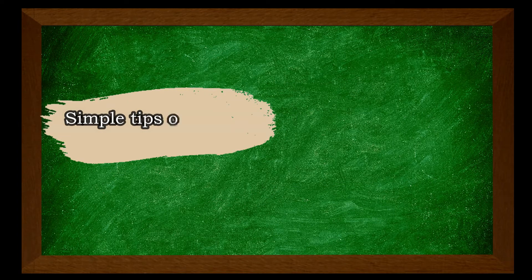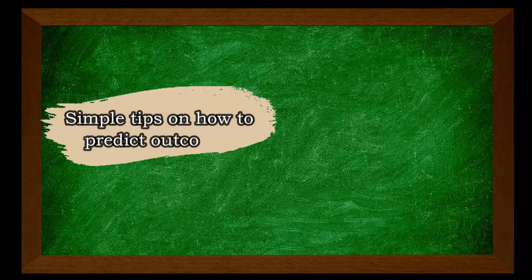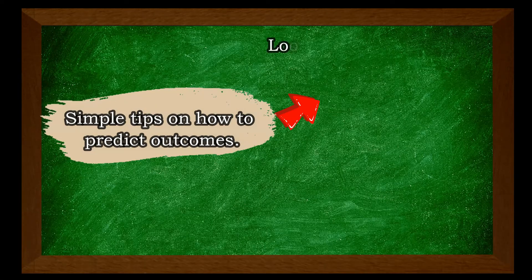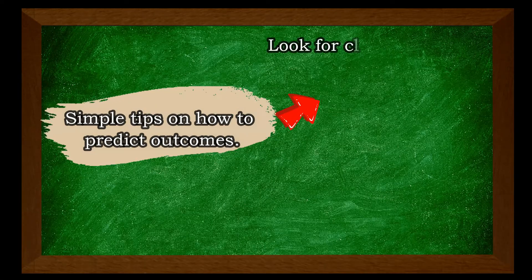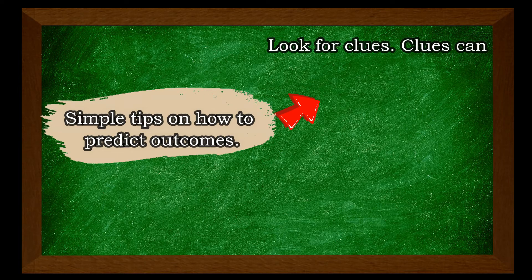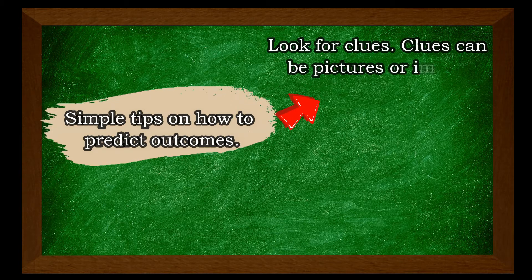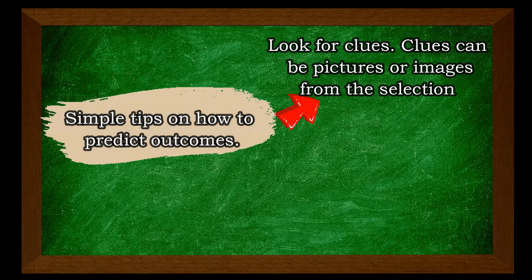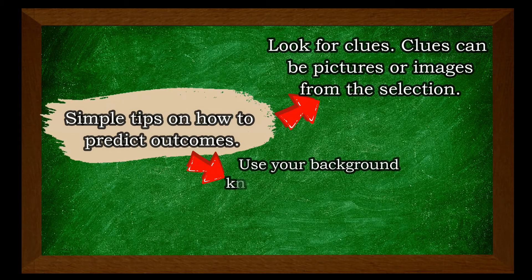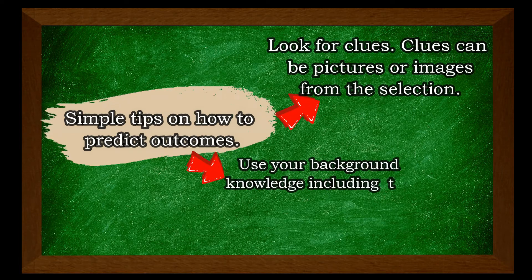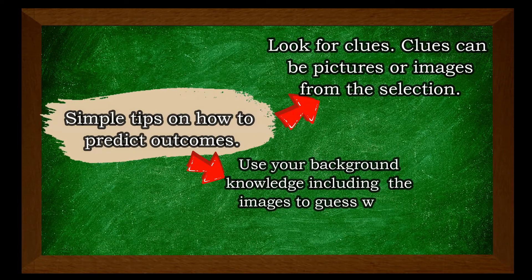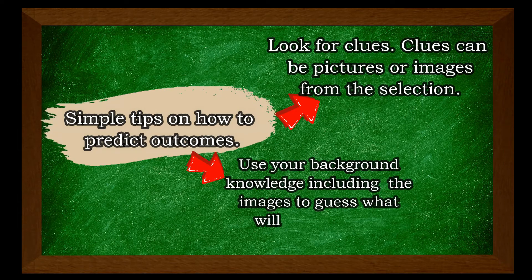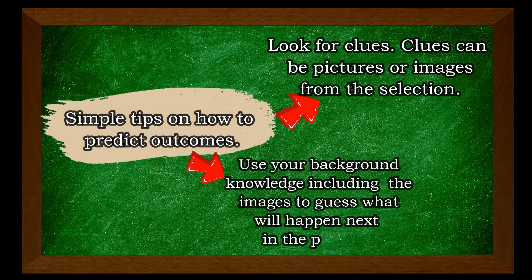Don't you know that there are simple tips on how to predict outcomes? First, look for clues. Clues can be pictures or images from the selection. Second, use your background knowledge, including the images, to guess what will happen next in the passage.